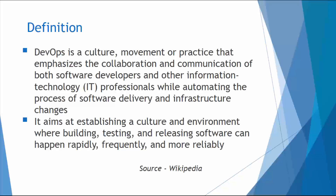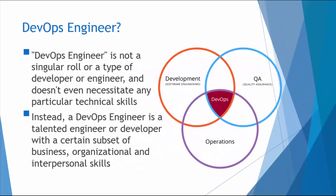So who is a DevOps engineer? The DevOps engineer is not a singular role or a type of developer or engineer, and the person doesn't even necessitate any particular technical skill. Ideally you're both a developer and an engineer at the same time. This entire course aims at making you both, working on multiple tool sets and platforms such as Google Cloud Platform, Kubernetes, Docker, and Java programming.